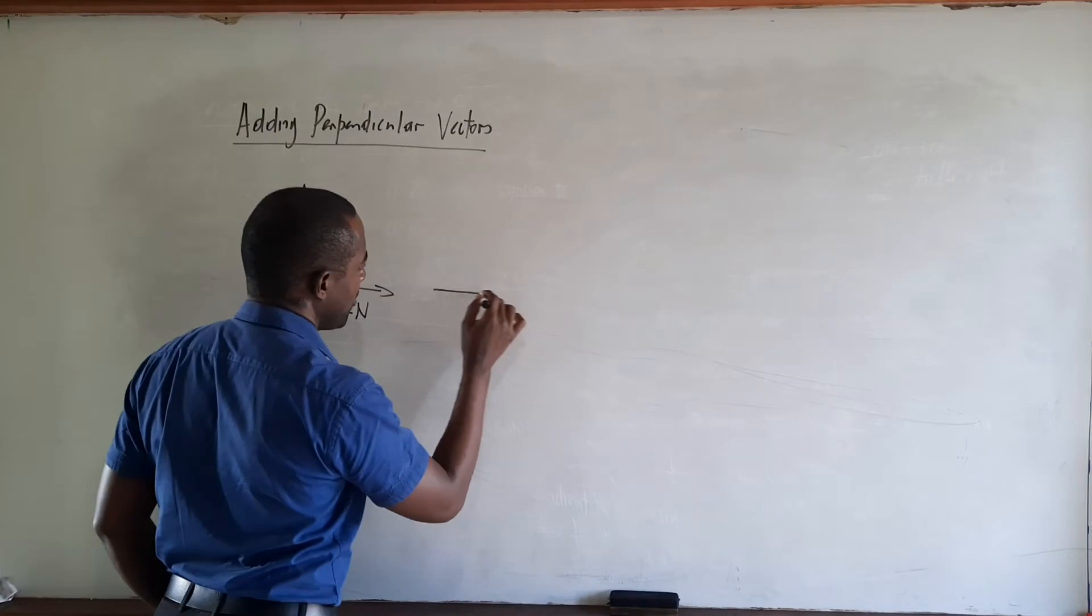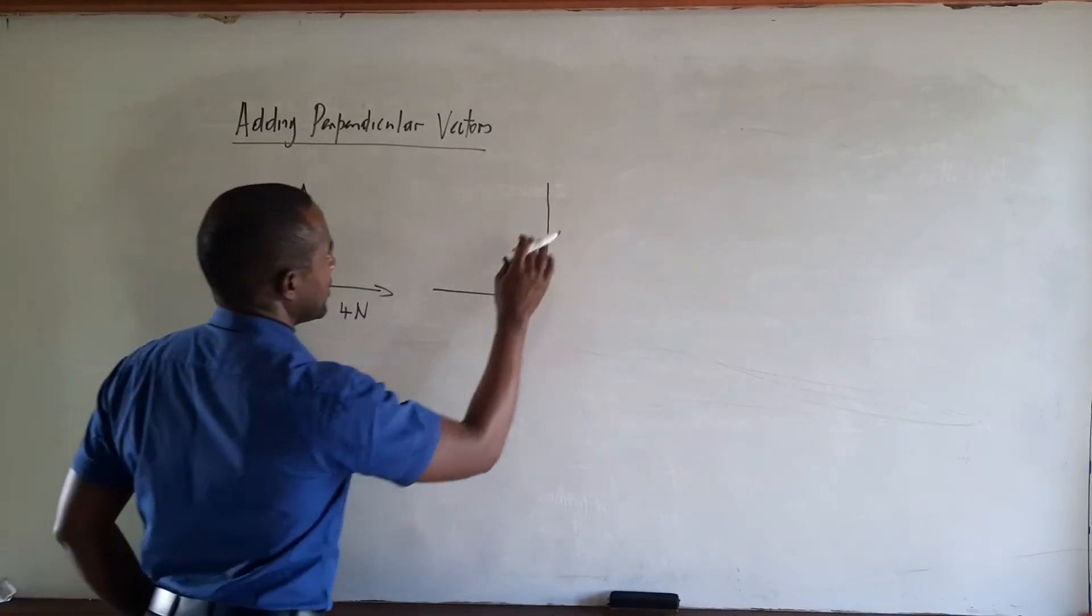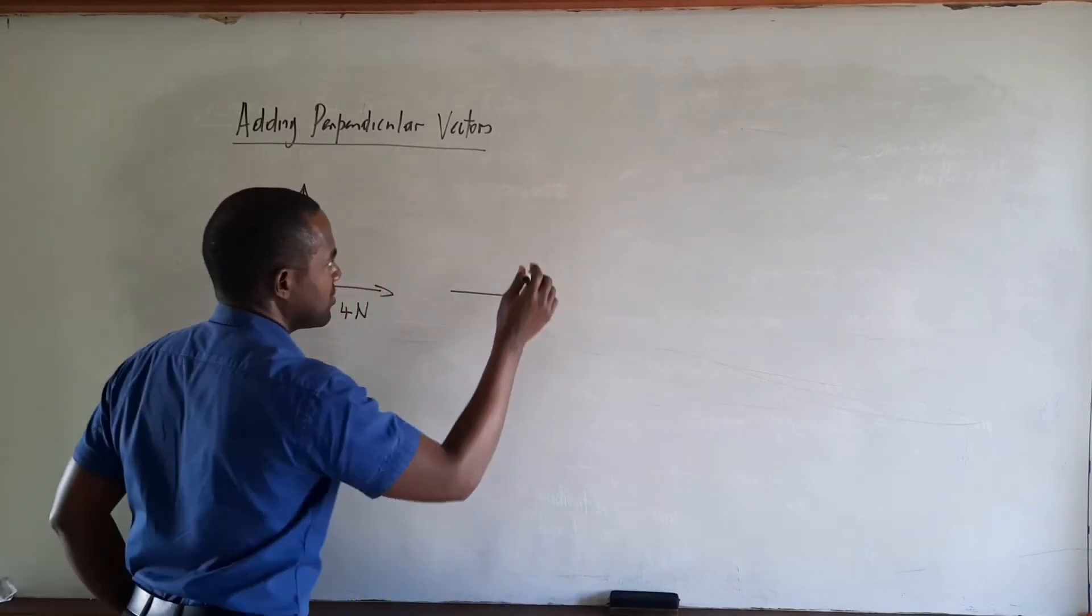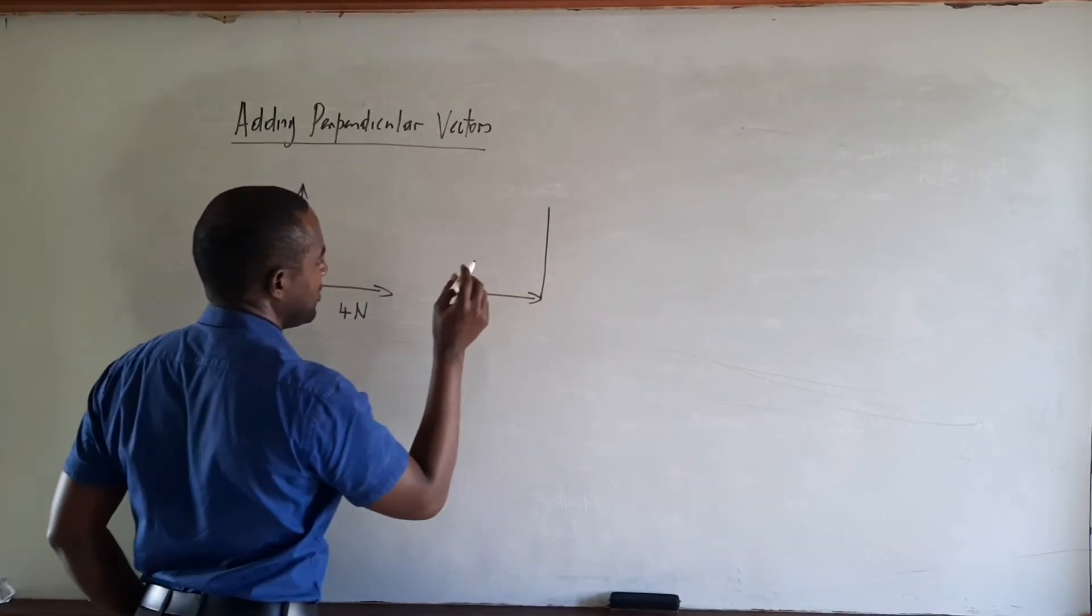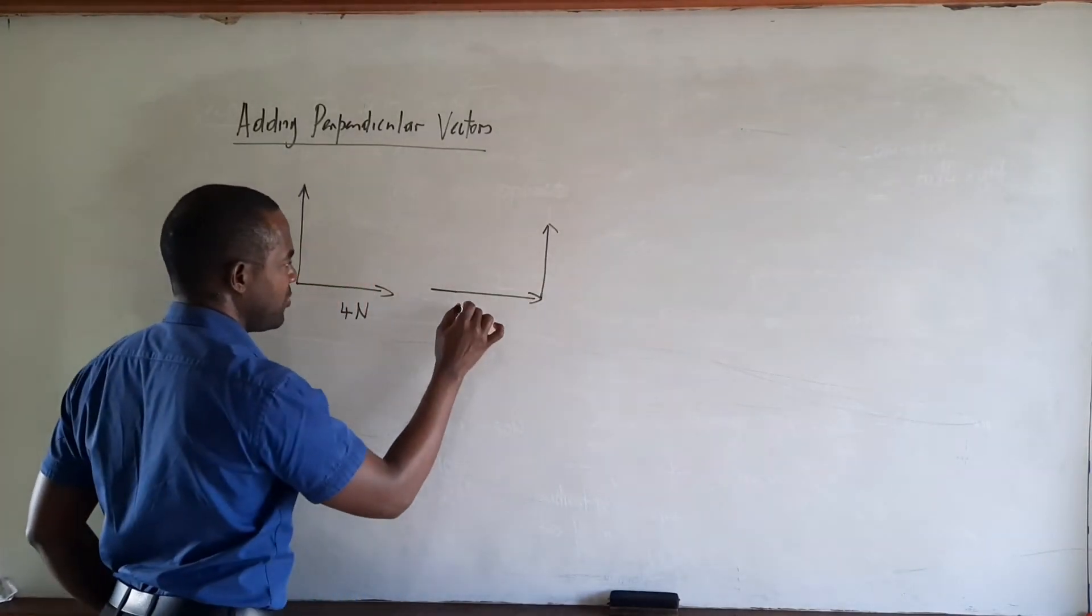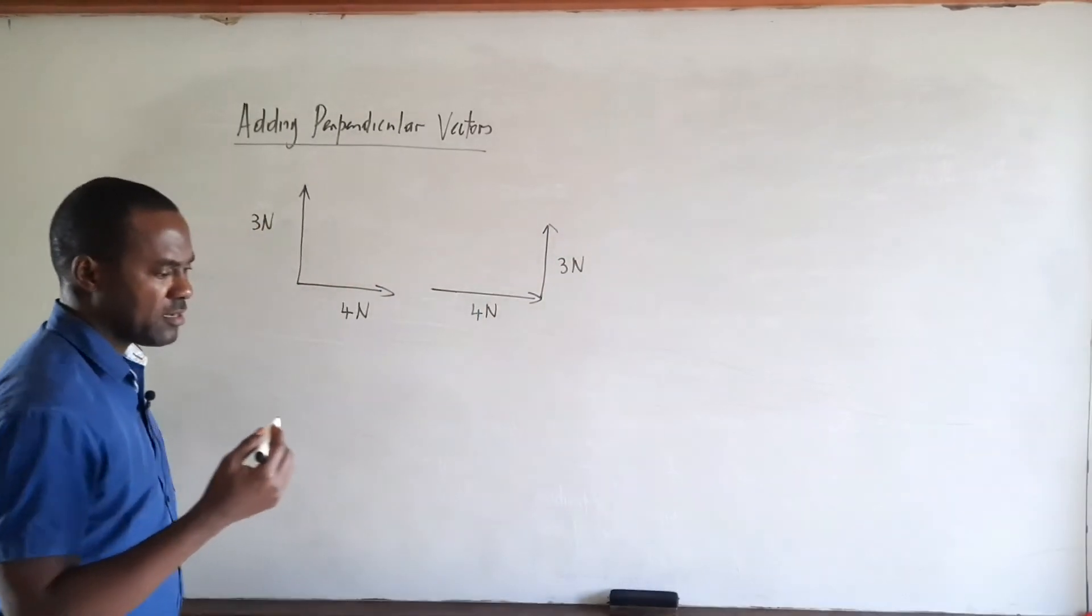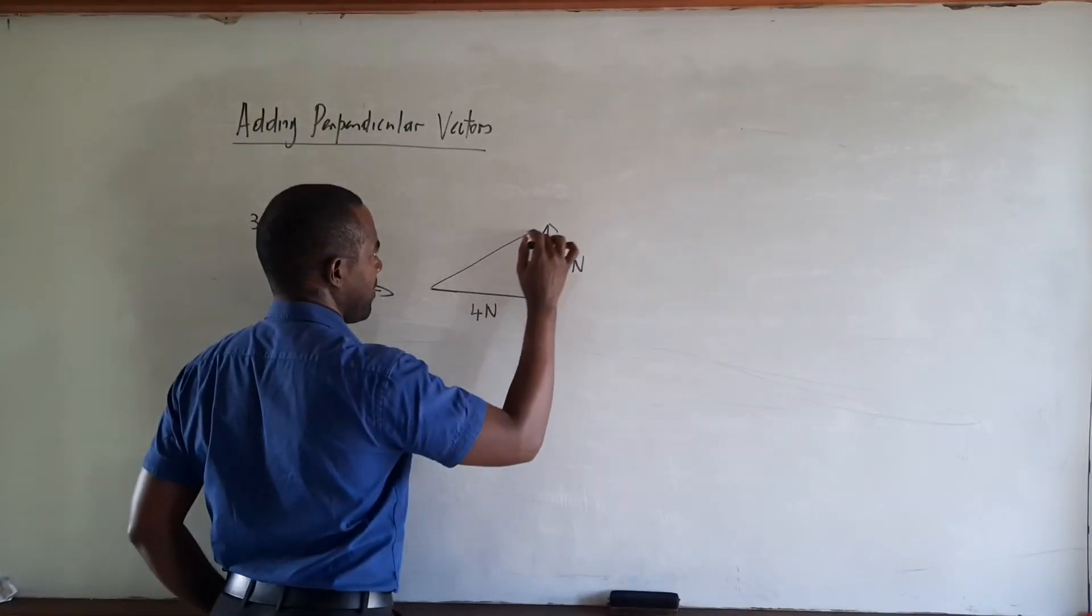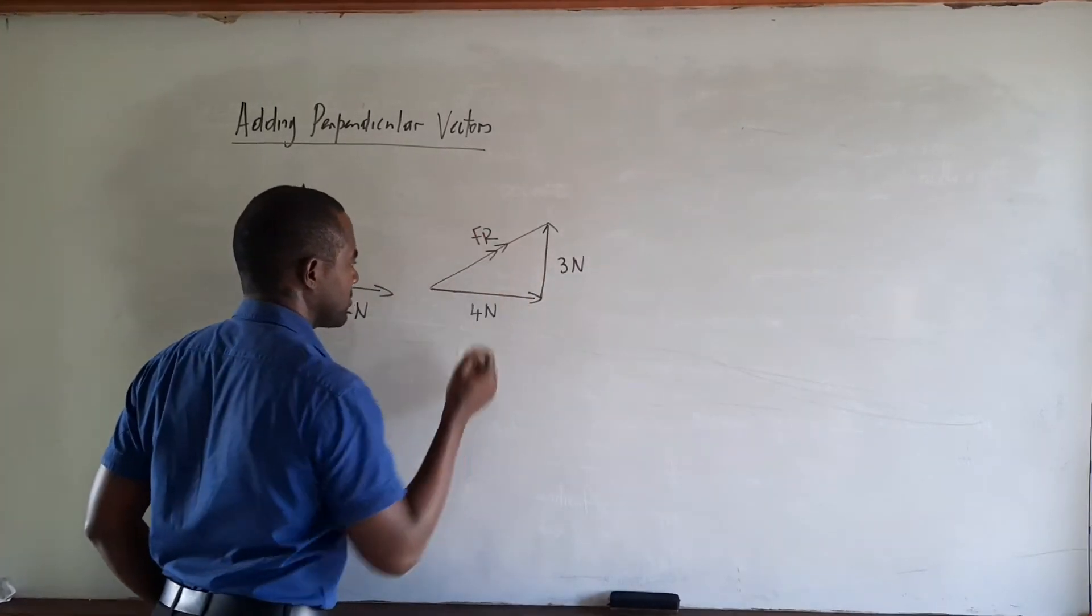We will have our 4 Newton force and our 3 Newton force, but just to be consistent, since one is larger we try to represent that using a longer arrow. So if this is our 4 Newton force and this is our 3 Newton force, then the resultant is the hypotenuse of the triangle. We can complete our triangle and this will represent our resultant, which we can label FR.